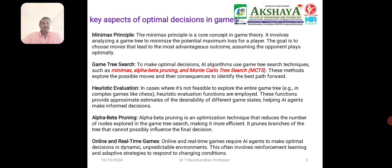The key aspects of optimal decision making include the Minimax principle, the core concept of game theory. It involves analyzing the game tree to maximize the potential gain and minimize the loss — the player's goal is to choose a move that leads to the most advantageous outcome, assuming the opponent plays optimally. To make optimal decisions, AI algorithms use game tree search techniques such as the Minimax algorithm, Alpha-Beta Pruning algorithm, and Monte Carlo Tree Search algorithm, exploring possible moves and their consequences to identify the best path forward.